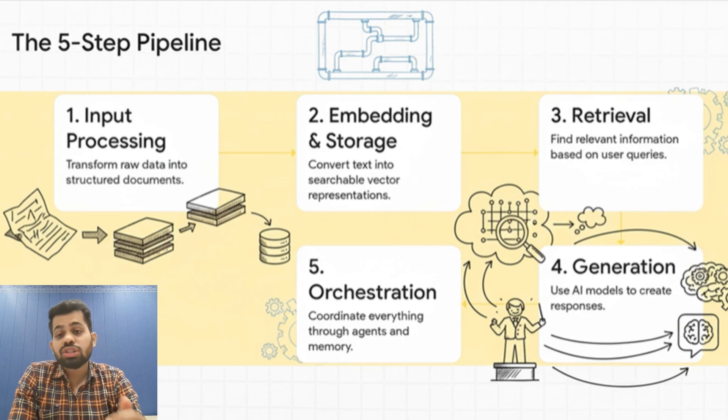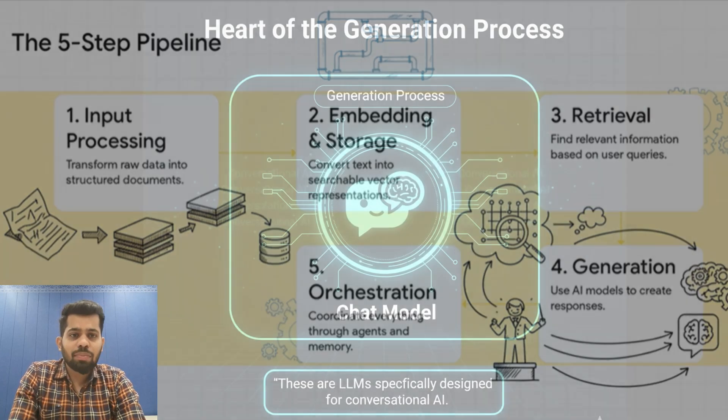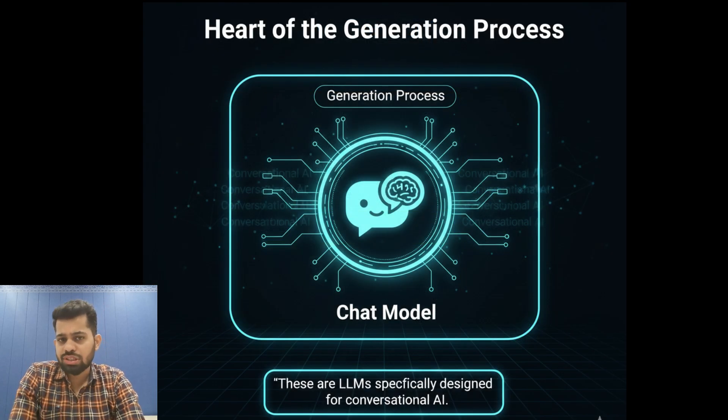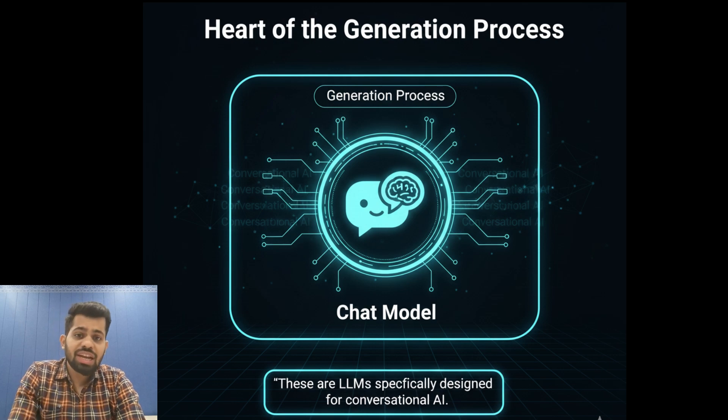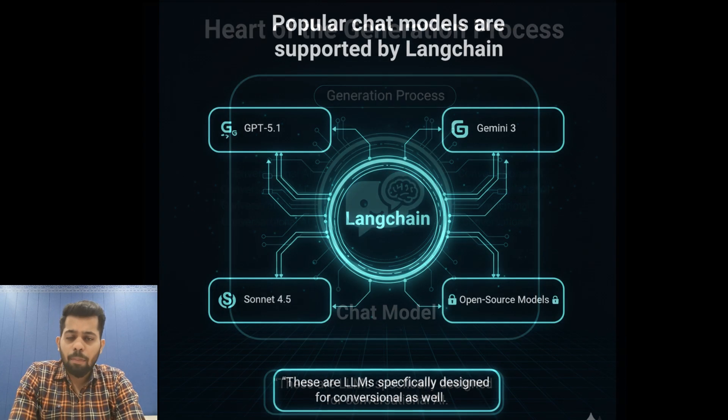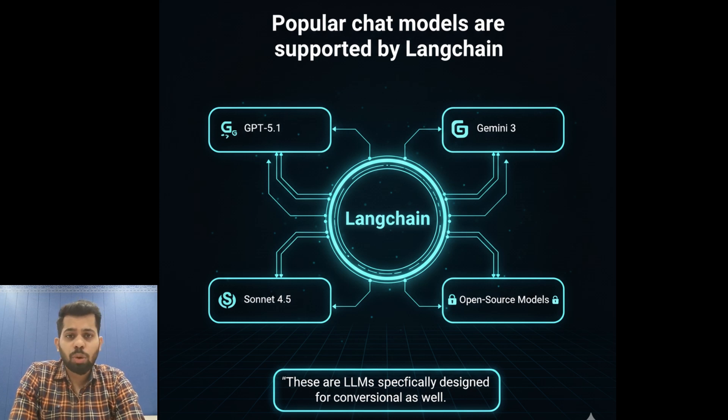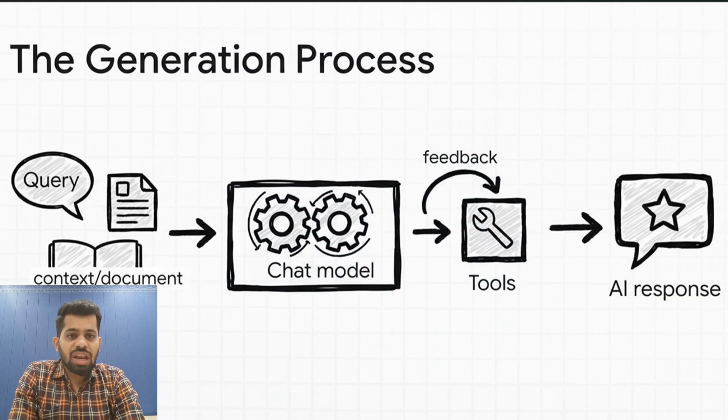We are now ready to generate the final output where we go to the generation stage. This is where everything comes together to create the final response. Chat models are the heart of the generation process. These are the large language models specifically designed for conversational AI. Popular models like GPT-4o, Claude 3.5 Sonnet, or Gemini 2.0 are all supported by LangChain, even some open-source free models as well. The relevant context from the retrieval and the instructions from the agents or memory are fed into the chat models.